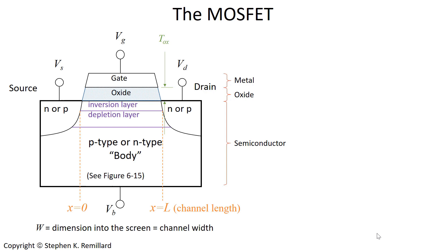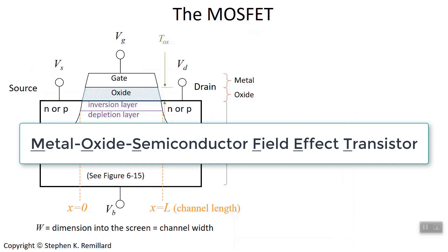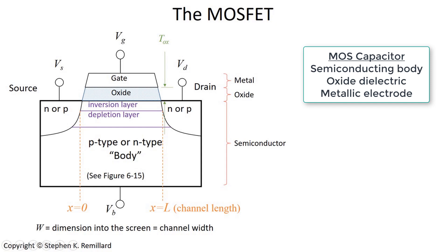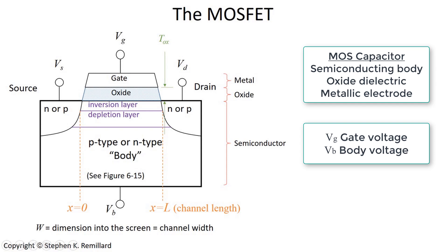Let's have some introductory discussion of the MOSFET, the metal oxide semiconducting field effect transistor. It's based on the MOS capacitor. The MOS capacitor is composed of the semiconducting block called the body, a thin film oxide on top of it, and a thin film metallic gate on top of it, with a voltage attached to that gate called the gate voltage, and a voltage attached to the body called the body voltage.